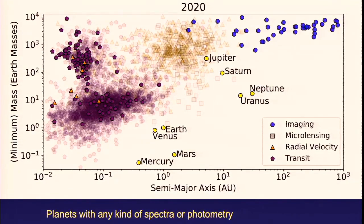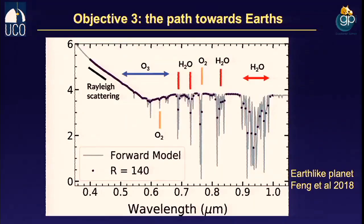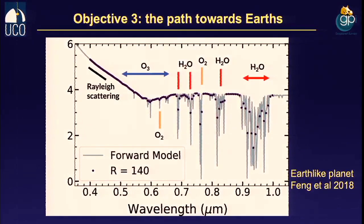Reason three for doing direct imaging of giant planets now is that it's part of the path toward doing the same measurements for Earths. I'll show spectra of giant planets made with advanced coronagraphs and integral field spectrographs. Twenty years from now, someone — probably Dimitri — will give a talk showing the same measurements for a planet like an Earth, where the individual lines are not carbon monoxide but oxygen. Learning to do this now on the Jupiters is part of how we're going to get to the Earths 20 years from now.